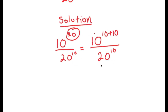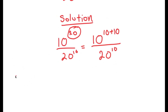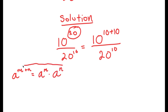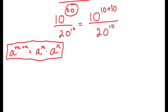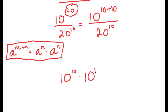The reason I did that is so I can use the property a to the power of m plus n equals a to the power of m times a to the power of n. Using this on 10 to the power of 10 plus 10, it turns into 10 to the power of 10 times 10 to the power of 10, all over 20 to the power of 10.